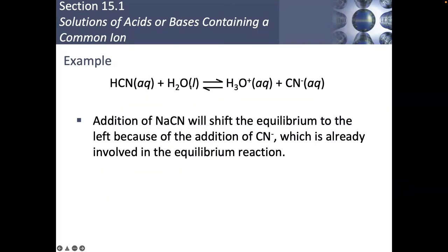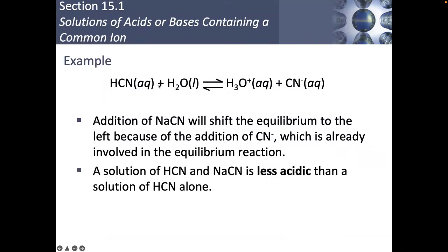The equilibrium is going to try to remove some of that cyanide that I added. Because hydronium ions are on the same side as the cyanide ion, if our equilibrium is shifting the opposite direction, that means that by adding a pinch of sodium cyanide, I would actually be pulling hydronium ions out of my solution. So HCN by itself is going to have a higher acidity than if I added just a tiny little pinch of sodium cyanide to that acidic solution, because it's going to move the equilibrium to the left.